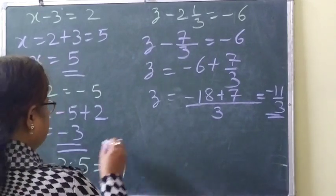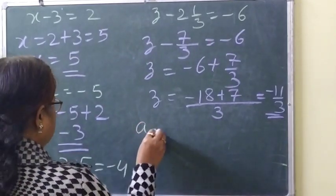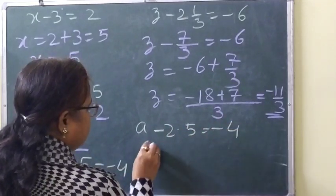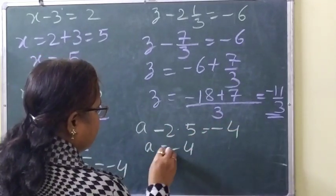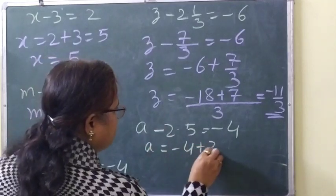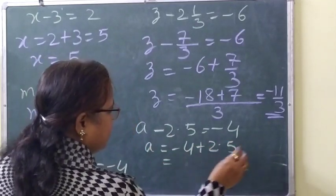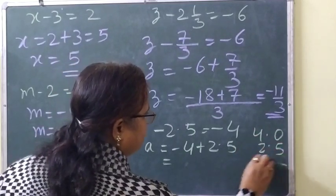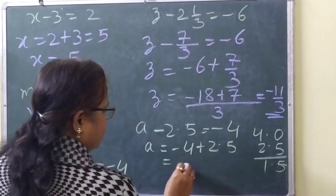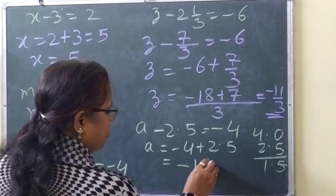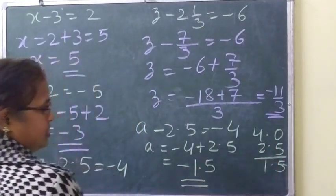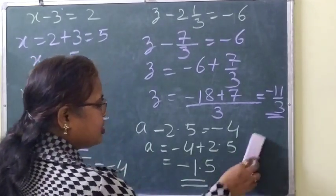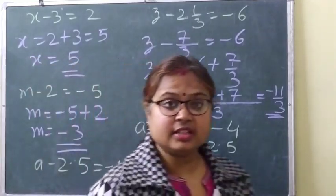Next: a minus 2.5 equals minus 4. So a equals minus 4 plus 2.5. When we subtract we get 1.5, and since minus is the greater, the answer is minus 1.5. You know subtraction in decimals, so there is no problem.